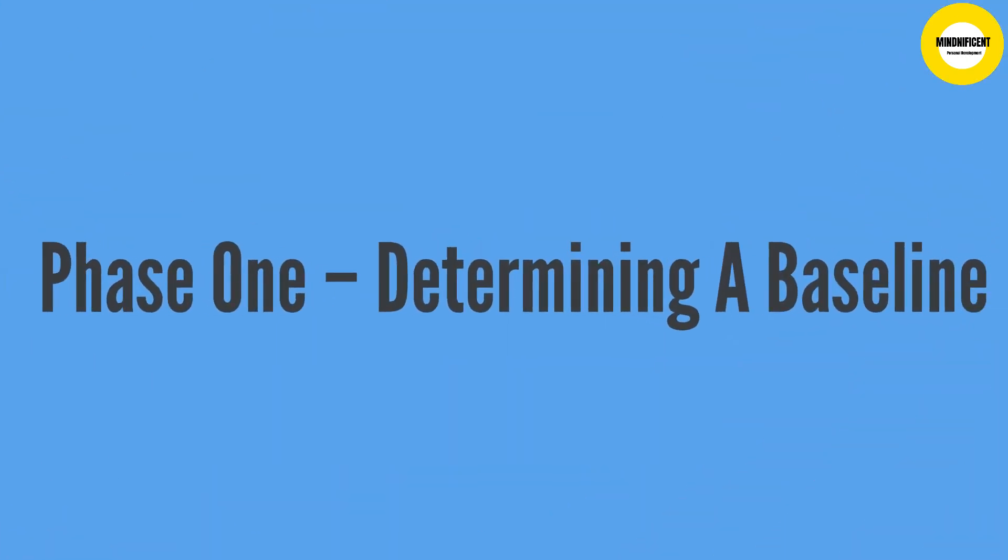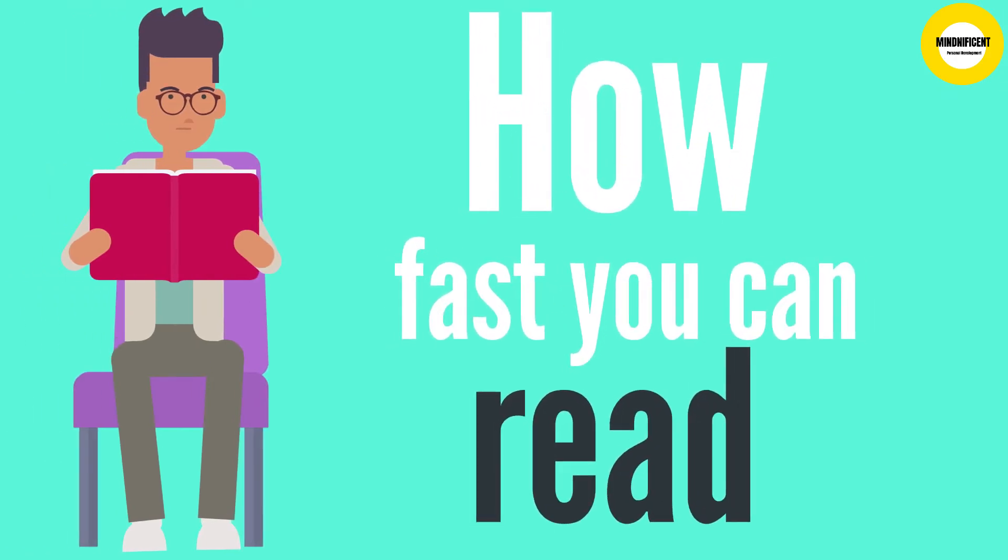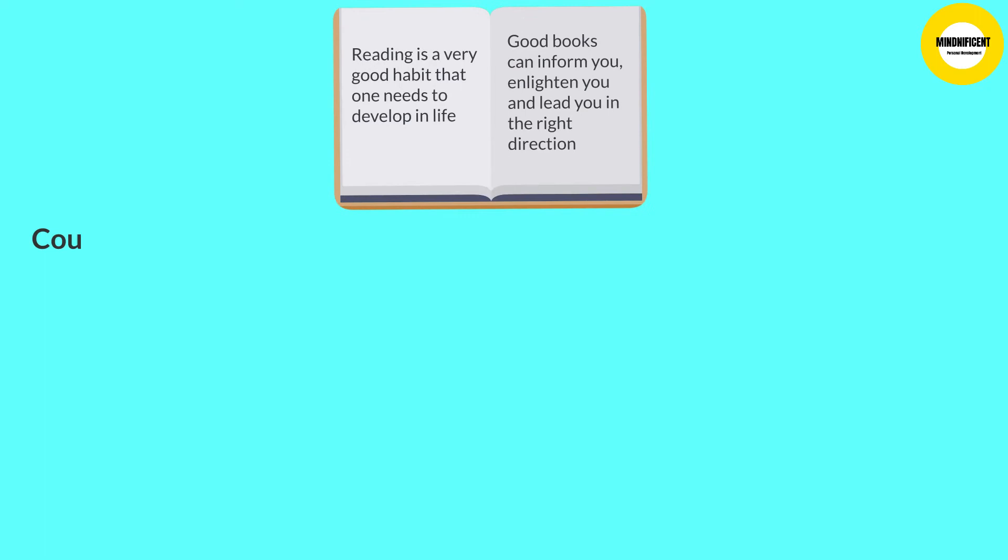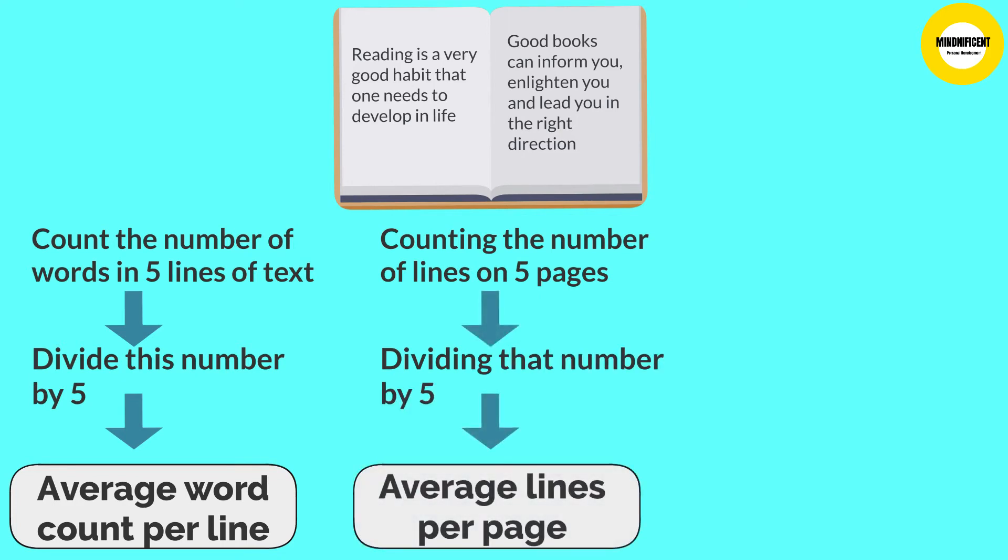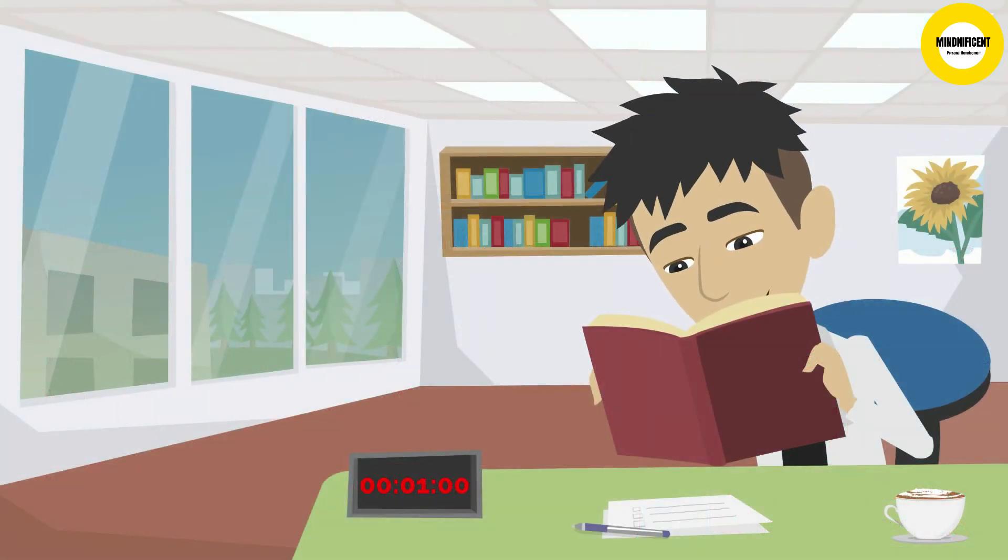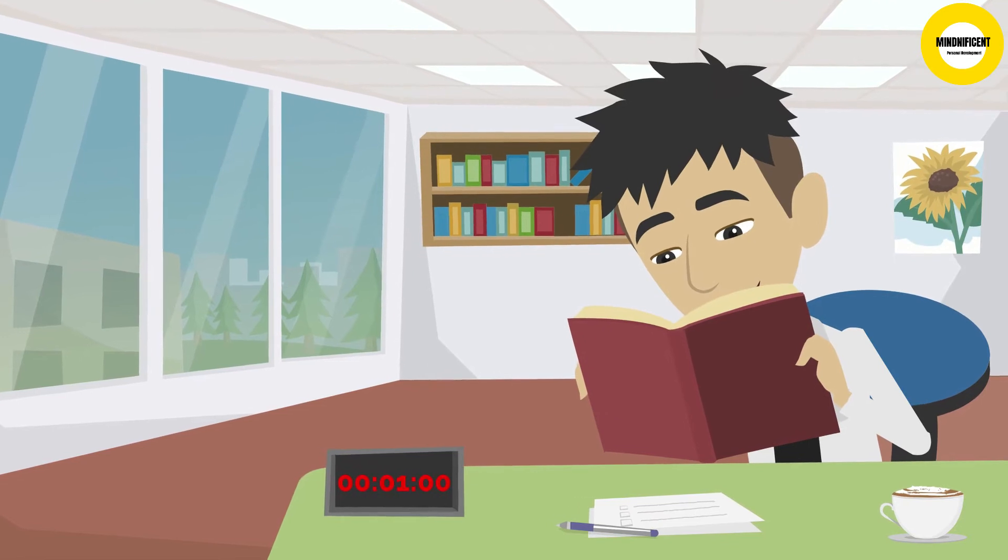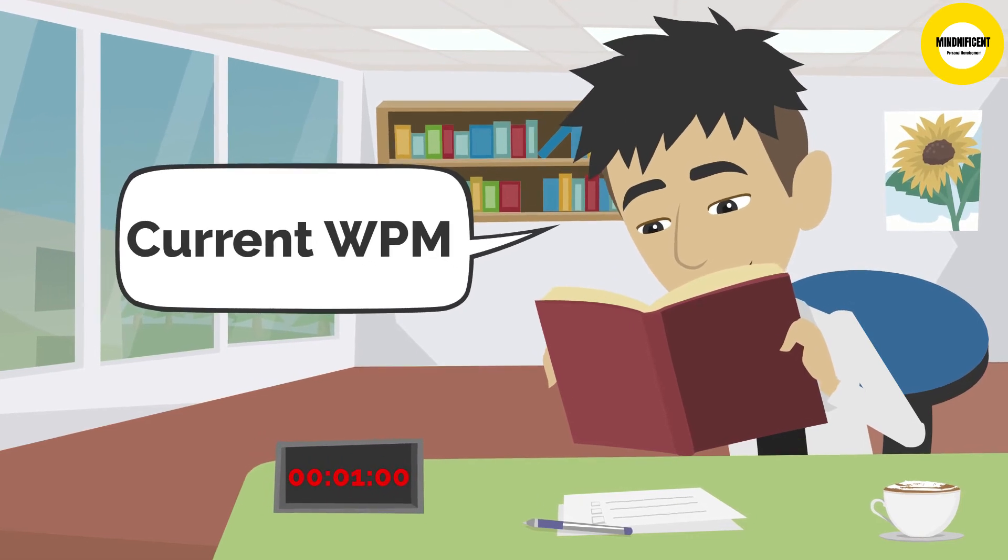Phase 1. Determining a baseline. So, first point of call, knowing how fast you can read. Lay a practice book out on the table, and count the number of words in five lines of text. Divide this number by five, and you have the average word count per line. Counting the number of lines of five pages and then dividing that number by five gives the average lines per page. Multiple page line average by average word count per line, and you get the average number of words per page. Simple enough. Time yourself for one minute of regular paced reading, making sure you're comprehending everything you're reading. This is your current words per minute. It's an important number, so note it down.